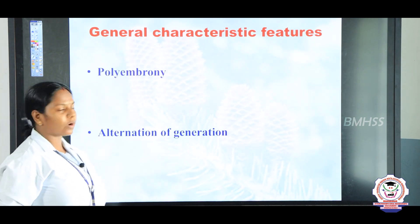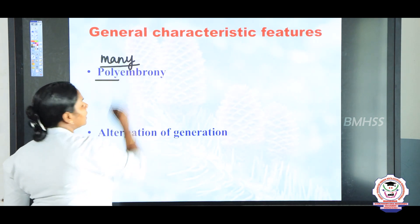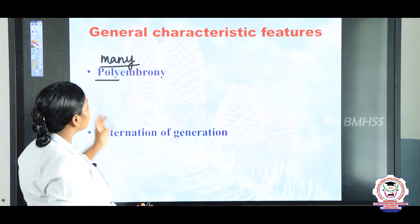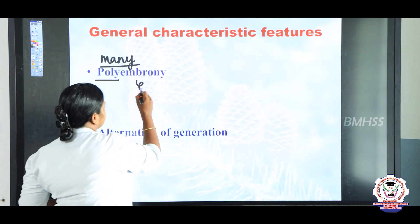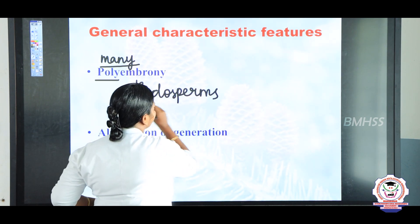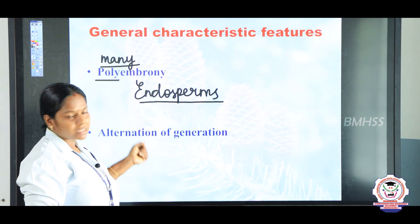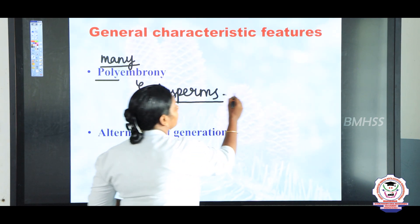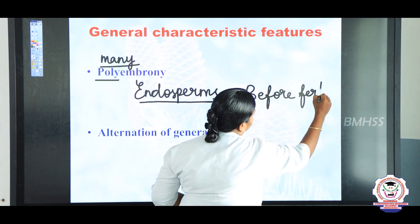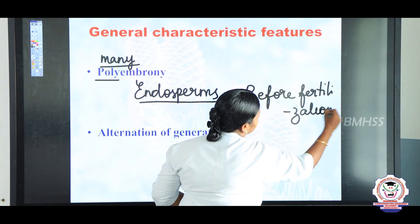Polyembryony is seen — 'poly' means many, so many embryos are formed. As a result of fusion of male and female, a seed is produced with many endosperms. How is endosperm formed? By the fusion of secondary nucleus and the male gamete. Notably, these endosperms develop before fertilization.